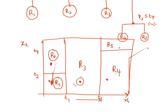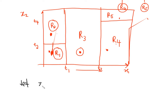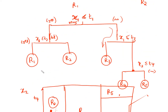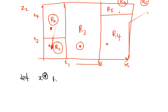Anything that falls in a region gets the predicted value of that region's mean. For a test observation we have never seen before, we check which region it falls into — is x1 less than t1? and so on — and predict its salary as the mean of that region. That is basically how we do prediction in regression trees.